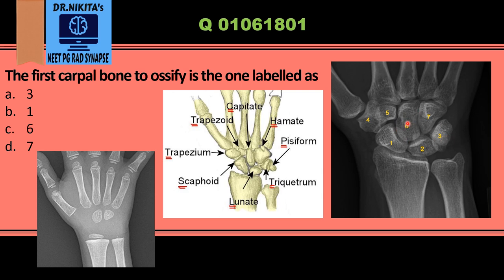In between, follow the carpal bones from capitate to hamate, then the proximal row excluding pisiform — triquetrum, lunate, scaphoid — then trapezium and trapezoid. It is a circle: starting from capitate, going to hamate, then through the proximal row excluding pisiform, completing the circle, with pisiform last. So in this infant radiograph we can see two carpal bones: capitate and hamate.